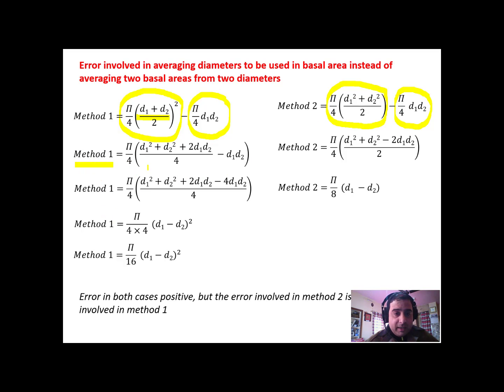Now, coming towards method one, solving it, we have the formula a plus b whole square. So we expand this term, which is a square plus b square plus 2ab. Now, before that, we take pi by 4 common. So we are left with d1 d2 here. Now, further solving this, we have solving these two terms, subtracting this term and this term, we get d1 square plus d2 square plus 2d1 d2 minus 4d1 d2 upon 4.